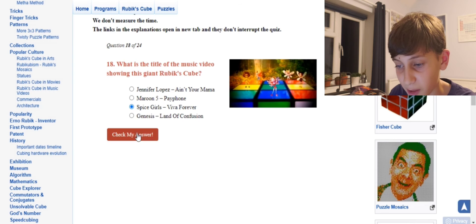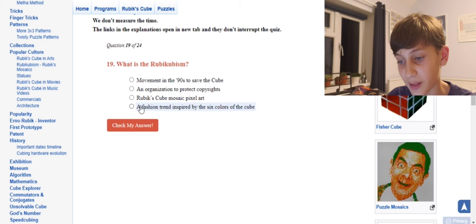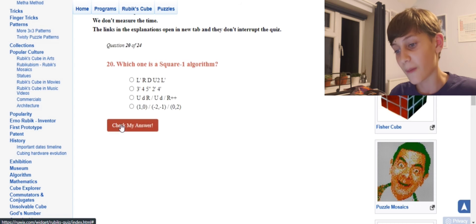Okay, that's Spice Girls. Don't tell, don't ask me how I know this, but it is. What is Rubikism? That I don't actually know. That's a good question. I'm gonna say it's an organization because it doesn't sound like a mosaic pixel art. Oh, it is a mosaic pixel art!